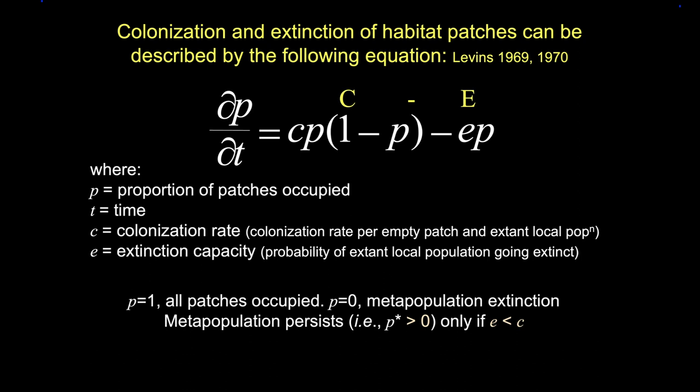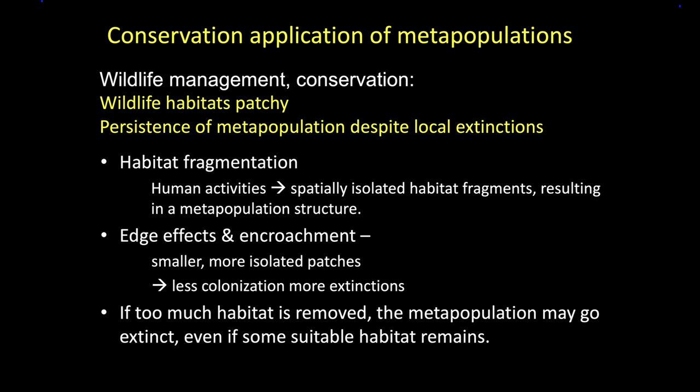If P equaled one — which it pretty much never is in the real world — every single site would have at least one individual. If P was zero, the metapopulation would be extinct, with no individuals alive in the area. This is useful in a conservation biology context because many organisms have patchy habitat. Rarely do we have a homogeneous landscape — we have higher quality, lower quality, areas physically separated from one another. This has become a really useful tool for modeling how we might get things to persist over time.